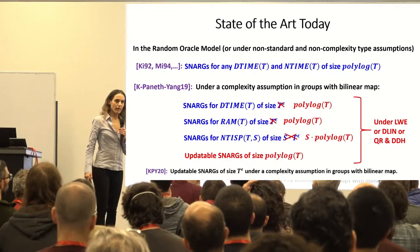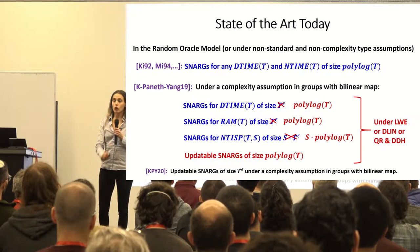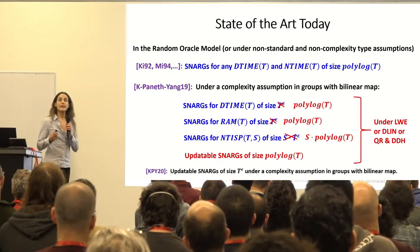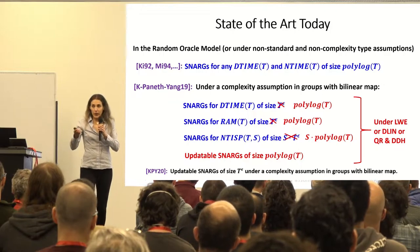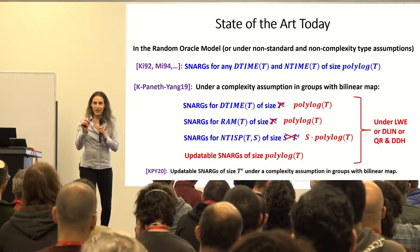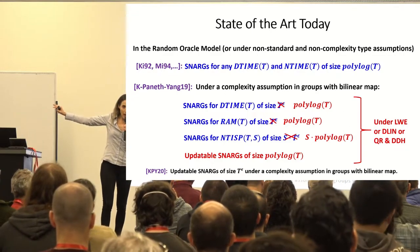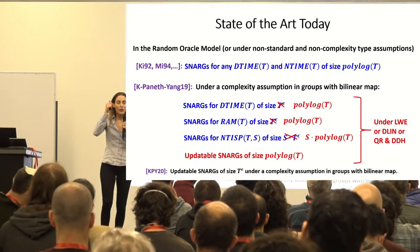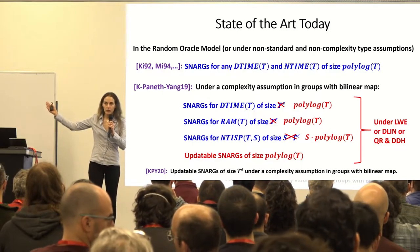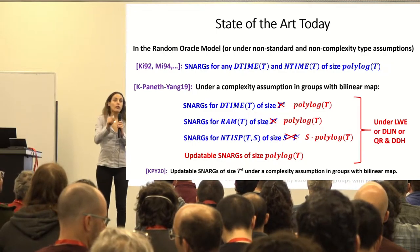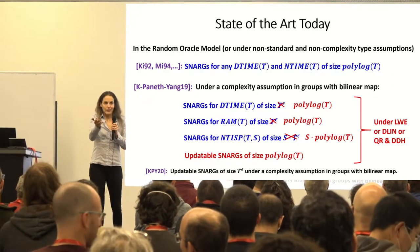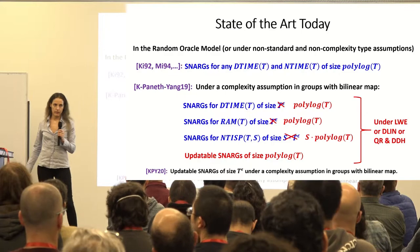Great question about the RAM model: T is actually the runtime of the RAM program, so T can be much smaller than the actual input, which can be gigantic. In the RAM model, the honest prover runs in time polynomial in the RAM time. So if I have a gigantic public ledger and want to do a computation that touches a few locations, the certificate depends only on the time it takes to do the RAM computation, not the size of the ledger.